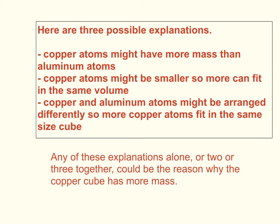Here are three possible explanations. Copper atoms might have more mass than aluminum atoms. Copper atoms might be smaller so more can fit in the same volume. Copper and aluminum atoms might be arranged differently so more copper atoms fit in the same size cube. Any of these explanations alone, or two or three together, could be the reason why the copper cube has more mass.